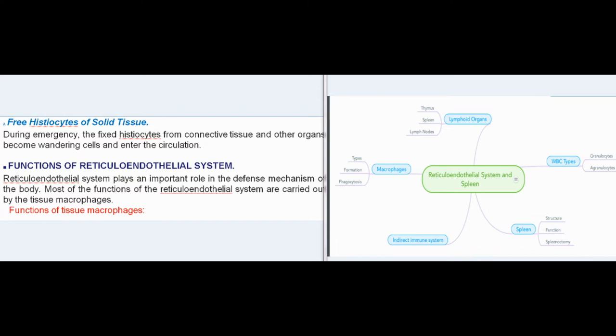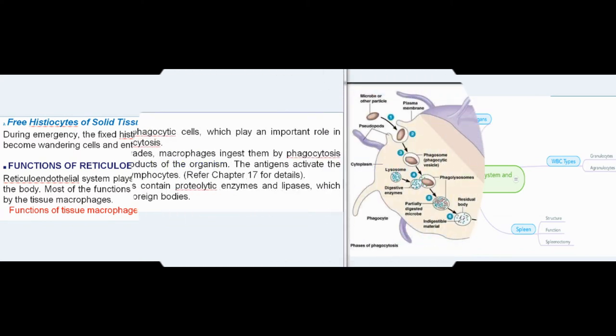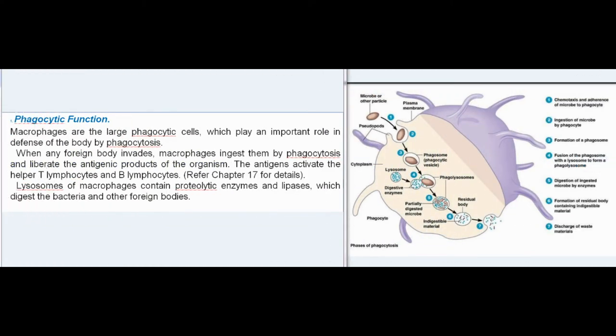Functions of the reticuloendothelial system: The reticuloendothelial system plays an important role in the defense mechanism of the body, with most functions carried out by tissue macrophages. Phagocytic function: Macrophages are large phagocytic cells which defend the body by phagocytosis. When a foreign body invades, macrophages ingest it by phagocytosis and liberate the antigenic products of the organism. The antigens activate helper T lymphocytes and B lymphocytes. Lysosomes of macrophages contain proteolytic enzymes and lipases which digest bacteria and other foreign bodies.